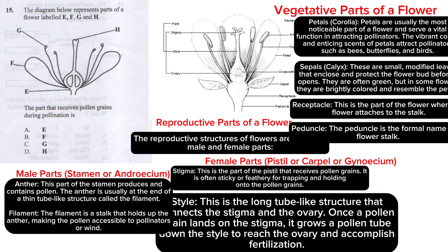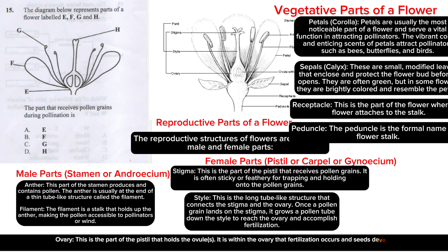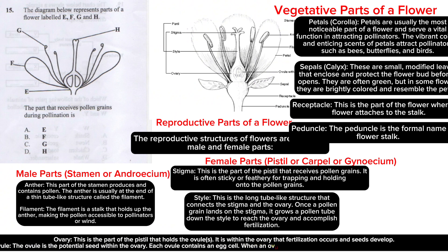The ovary is the part of the pistil that holds the ovules, and it is within the ovary that fertilization occurs and seeds develop. The ovule is the potential seed — each ovule contains an egg cell. When an ovule is fertilized by a sperm cell from a pollen grain, it develops into a seed. That covers all the parts of a flower.